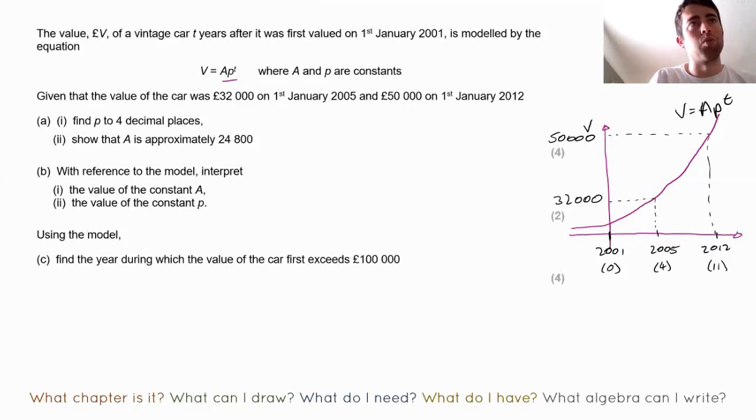When you get to part B, there's a word that jumps out to me there. This word: interpret. Whenever you see the word interpret in an exam, it means refer to the real life context. So when interpreting the value of the constant A, you're going to need to mention something about either value or time or both, maybe how they connect to each other. Similarly for the constant P. I'll leave the rest to you.